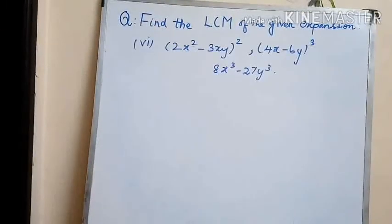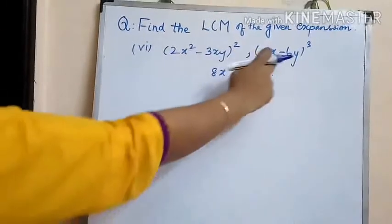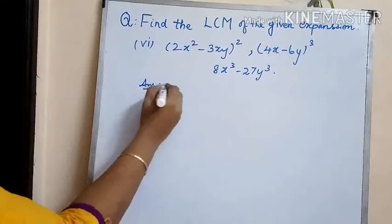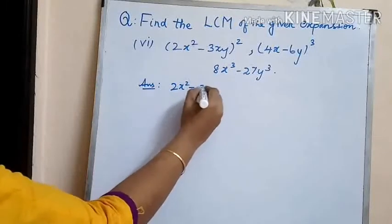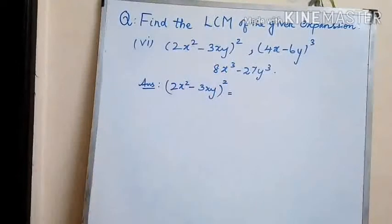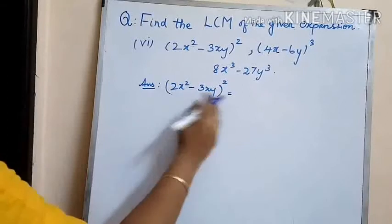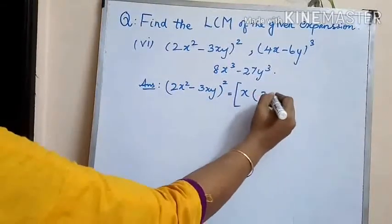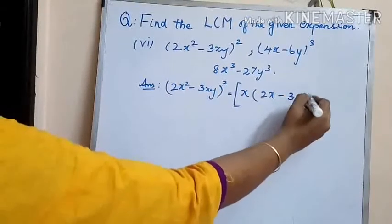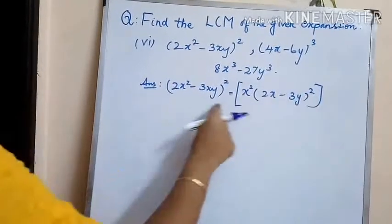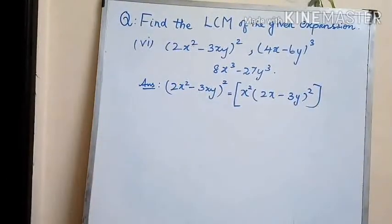The last question we have is: 2x squared minus 3xy whole squared, 4x minus 6y whole cube, and 8x cubed minus 27y cubed. Let us factorize each polynomial. For 2x squared minus 3xy whole squared, we take out the common factor x, giving us x squared into 2x minus 3y whole squared.